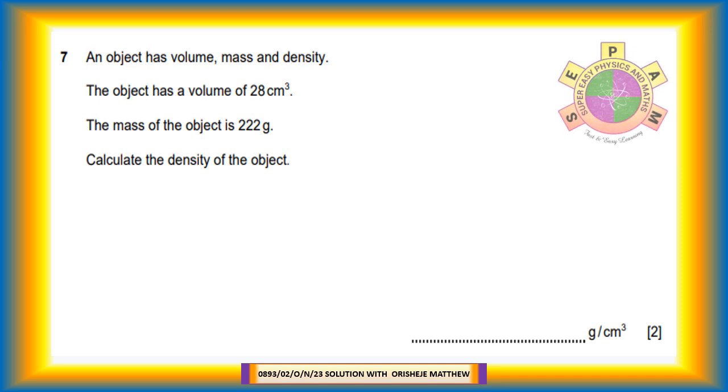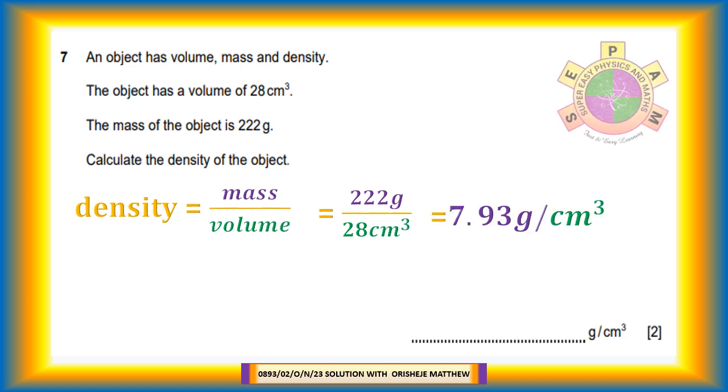Question 7. An object has volume, mass, and density. The object has a volume of 28 cubic centimeters. The mass of the object is 222 grams. Calculate the density of the object. Density is equal to mass divided by volume. Density equals 222 grams divided by 28 cubic centimeters. Density equals 7.93 gram per centimeter cube.